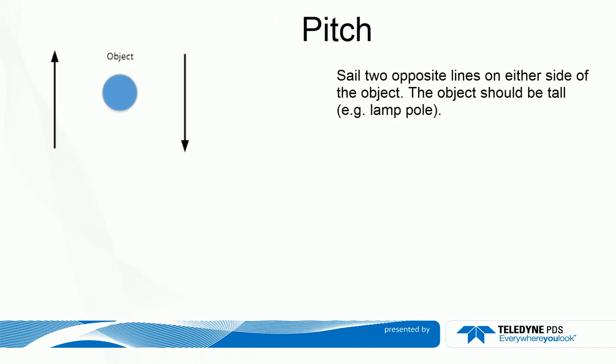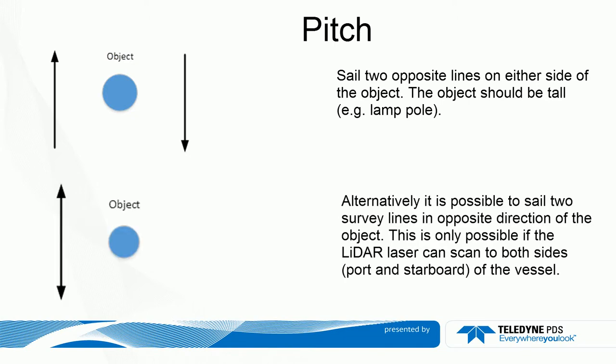For the pitch calibration, sail two opposite lines on either side of the object. The object should be tall, for example a lamp pole or a crane. Alternatively, it is possible to sail two survey lines in opposite directions past the object. This is only possible if the LIDAR laser can scan to port and starboard side of the vessel.